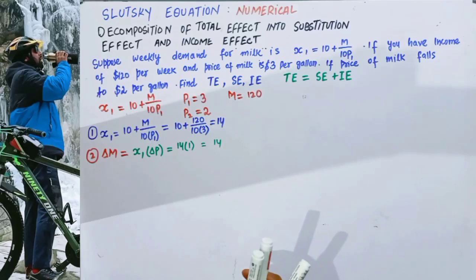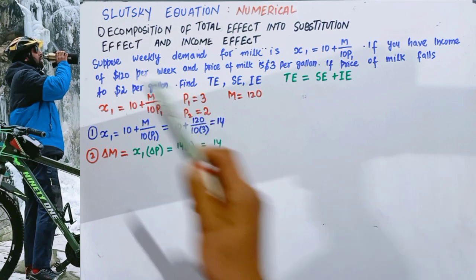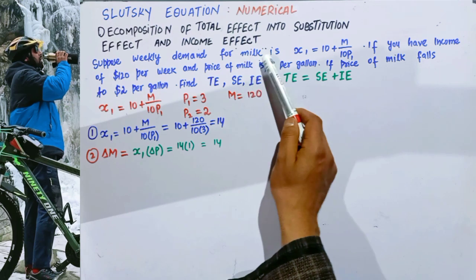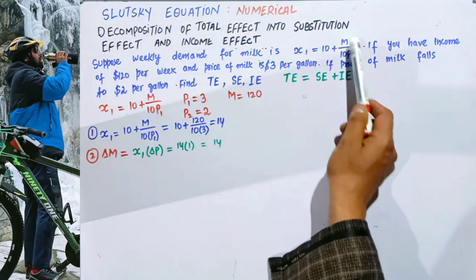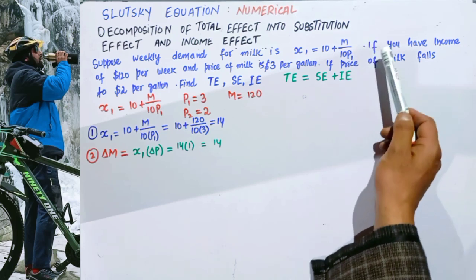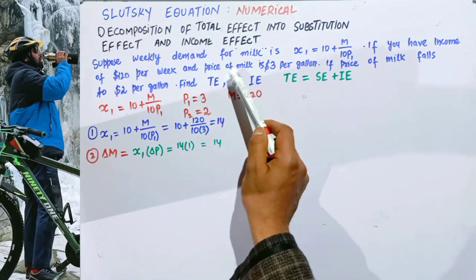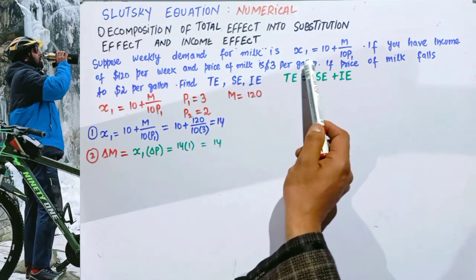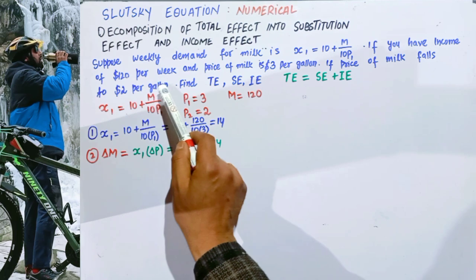In this video we will learn how to decompose the total effect of a price change into substitution effect and income effect using Slutsky's equation. The question is: suppose weekly demand for milk is given as x1 = 10 + m / (10·p1), where m is income and p1 is price. If initial income is $120 per week and the price of milk is $3 per gallon, and price falls to $2 per gallon, find the total effect, substitution effect and income effect.